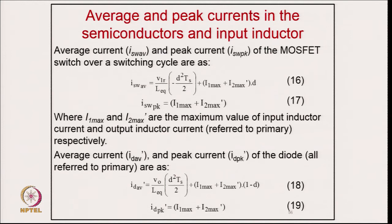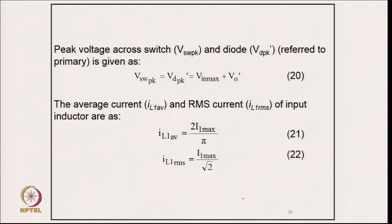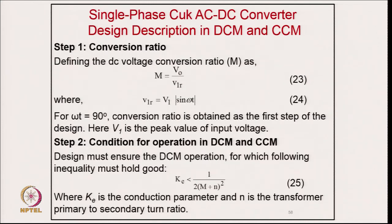For the CUK converter, the switch average current and peak current are calculated from a rectangular waveform diagram. The diode average current, peak current, switch peak voltage, diode peak voltage, input inductor RMS current, average current, and maximum current in the inductor are all derived from the analysis relations.